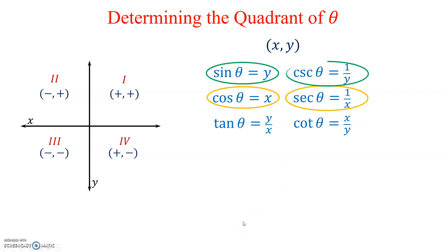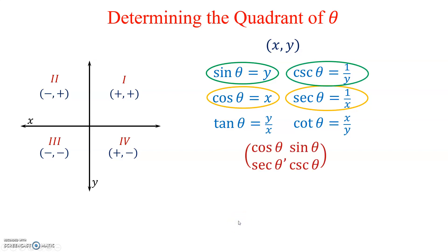Sine and cosecant are closely related to the y-coordinate. So we can set up a generic ordered pair that shows the x-coordinate is associated with either cosine or secant, while the y-coordinate is associated with sine and cosecant.